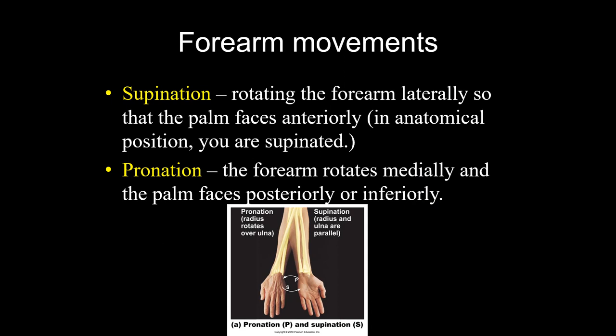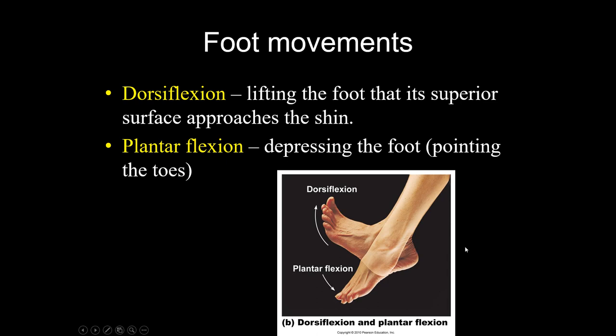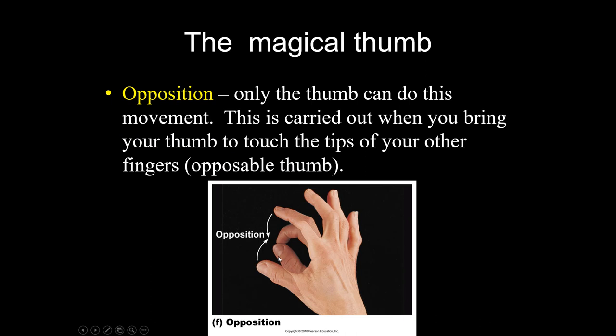Circumduction is moving your arms or legs in a cone in space. Rotation means spinning around its axis. Supination and pronation are about the forearm — ordinarily the radius and ulna are parallel and in that position you are supinated. If you flip your hand so it faces backwards, the radius crosses over the ulna — that's pronation. Dorsiflexion and plantarflexion are about the foot: dorsiflexion pulls the toes back toward the tibia, plantarflexion is pointing your toes. Opposition is a thumb movement where it goes across and touches the other fingers — primates all have opposable thumbs.